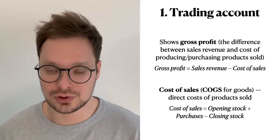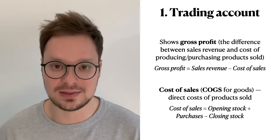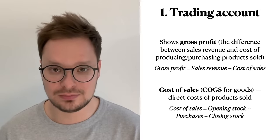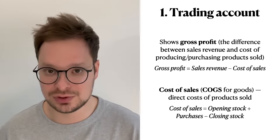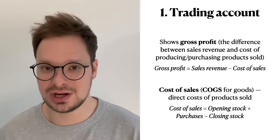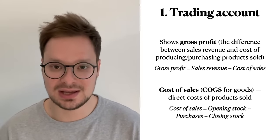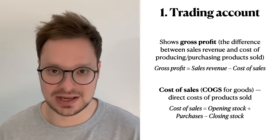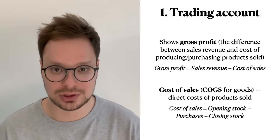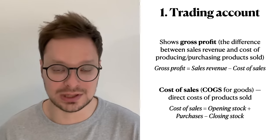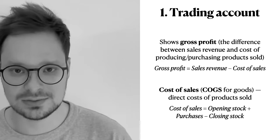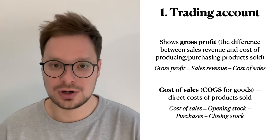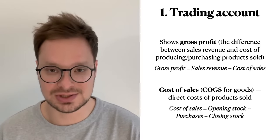The first part of profit and loss account is called the trading account. Its purpose is to show gross profit. Gross profit is the difference between revenues and the cost of purchasing or producing the products that are sold. The formula is: gross profit = revenue minus cost of sales. Cost of sales is the direct cost of products sold. You can also call it COGS — cost of goods sold — for goods only, while cost of sales is the more general term. The formula for cost of sales is: opening stock + purchases − closing stock.